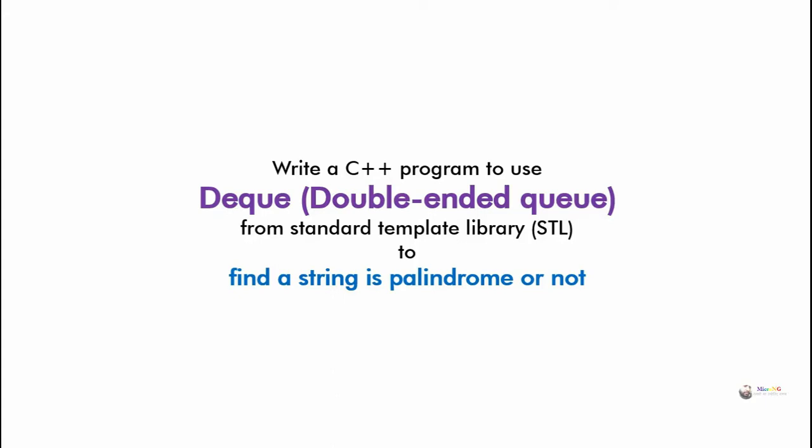Write a C++ program to use deque (DQ), the double-ended queue from the Standard Template Library, to find whether a string is a palindrome or not. In this program we are using the DQ available in the Standard Template Library of C++ to find if a string is a palindrome or not.